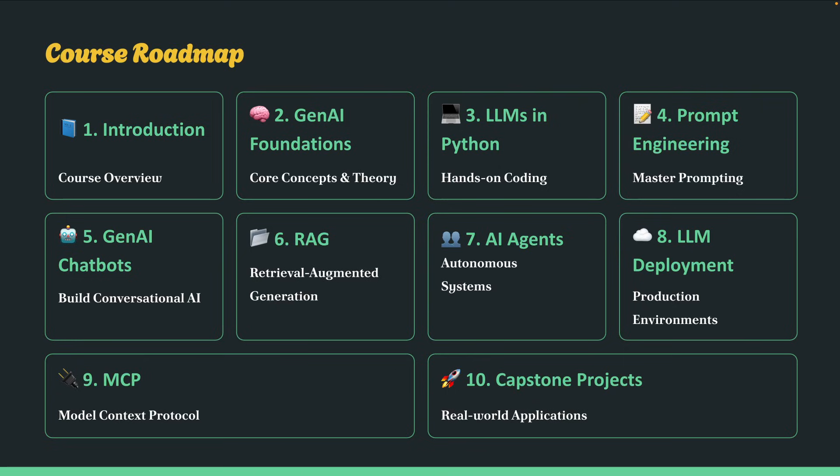The seventh section is about AI agents. You will learn how agents work and create multi-agent workflows using Pydantic, Autogen, and CrewAI. The eighth section is about deployment, where you will learn how to deploy LLMs locally with Docker, run them on AWS EC2, serve them on cost-effective GPUs on platforms like RunPod, and achieve high-throughput LLM inference using vLLM.